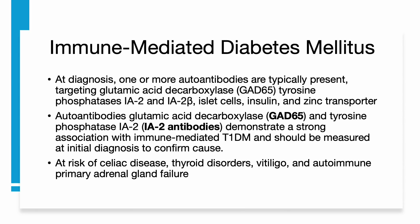At diagnosis, one or more autoantibodies are typically present, targeting glutamic acid decarboxylase (GAD65), tyrosine phosphatase IA2 and IA2-beta, islet cells, and zinc transporters. Due to the availability of highly automated and widely accessible assays, GAD65 and IA2 autoantibodies are recommended for initial testing in newly diagnosed type 1a diabetes. GAD65 antibodies have a high prevalence at diagnosis and may remain detectable for years.